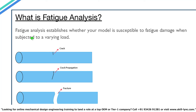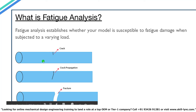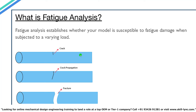Fatigue failure occurs due to the formation of microscopic cracks in the surface of the material as cyclic loads continue. The crack increases in size until it reaches a certain length, leading to fracture. This is visible in the model shown on screen — a normal shaft with a load acting in both directions develops a small crack that eventually experiences fracture.